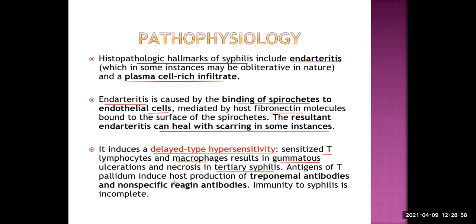Antigens of Treponema pallidum induce host production of treponemal antibody and nonspecific reagin antibody. For the diagnosis of syphilis, we need to detect two types of antibodies: nonspecific antibodies, which are more sensitive but nonspecific — like VDRL and RPR — and specific treponemal antibodies detected by tests like FTA absorption test and Treponema pallidum hemagglutination. In clinical practice, we always do VDRL in the beginning, and for confirmation we go for the specific tests. Immunity to syphilis is incomplete — once a person has syphilis, they should not think they are immune; they may be infected again.